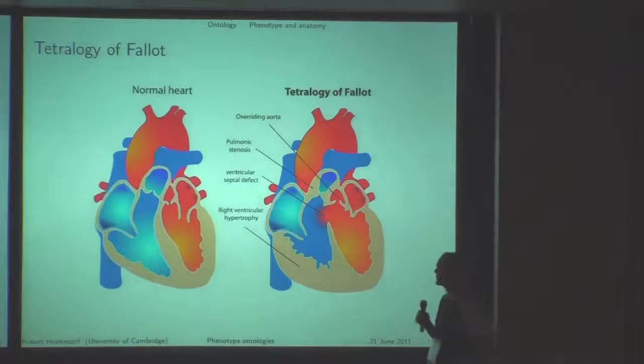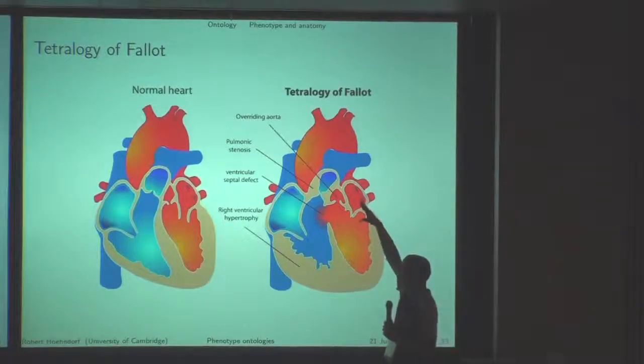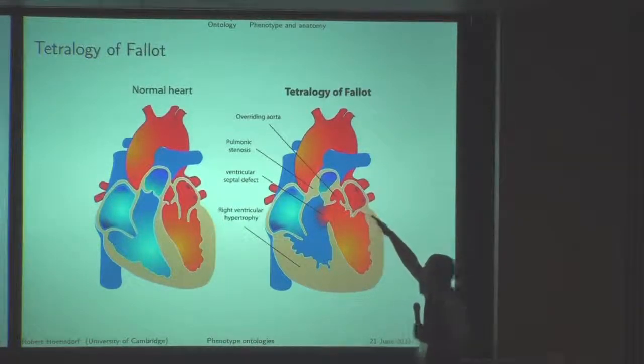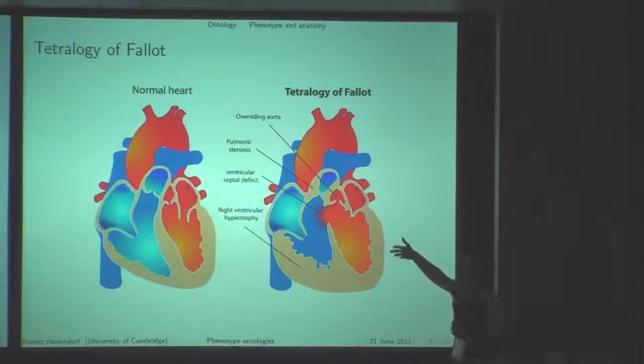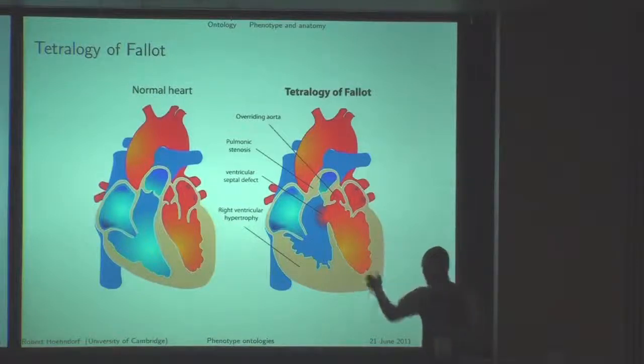When we look at one example, this is a disease called Tetralogy of Fallot, a heritable heart disease. It's characterized by four phenotypes: the overriding aorta, the pulmonic stenosis, ventricular septal defect, and the right ventricular hypertrophy.